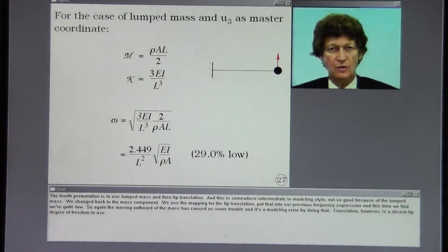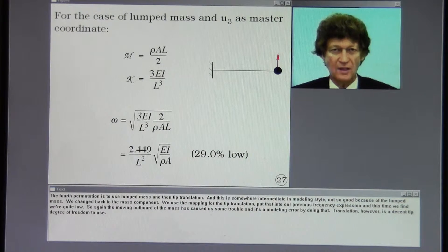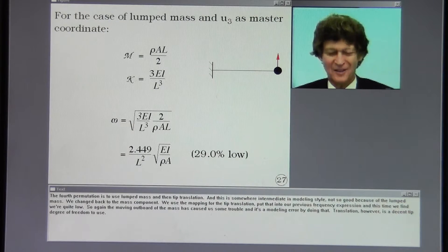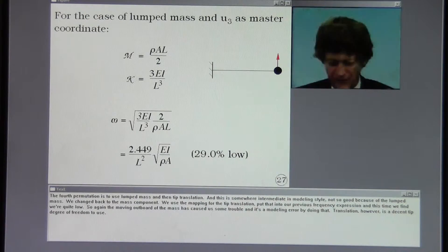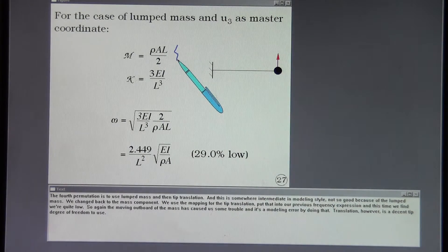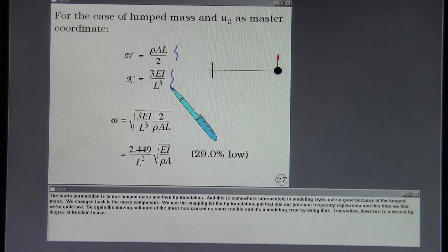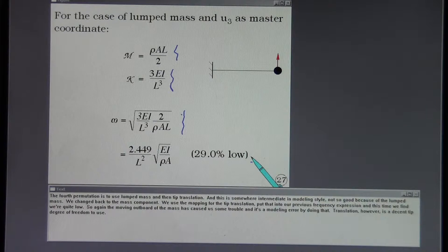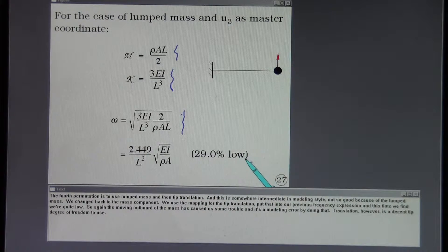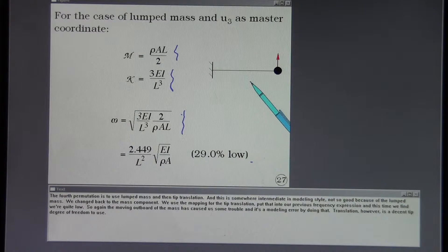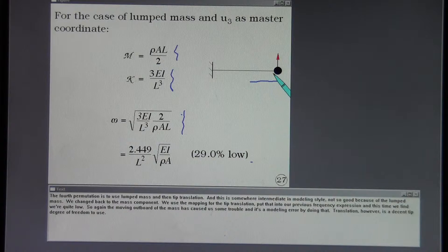The fourth permutation is to use lumped mass and then tip translation. And this is somewhere intermediate in modeling style. Not so good because of the lumped mass. We change back to the mass component. We use the mapping for the tip translation. Put that into our previous frequency expression. And this time we find we're quite low. So again the moving outboard of the mass has caused us some trouble. And it's a modeling error by doing that. Translation, however, is a decent tip degree of freedom to use.